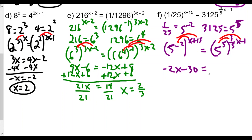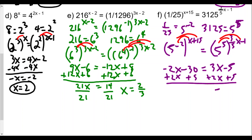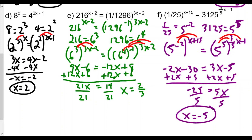Adding 2x to both sides and adding 5 to both sides: −25 = 5x, so x = −5. Checking: plugging x = −5 in, −5 + 15 = 10, so the left side is (1/25)^10 = 5^(−20). On the right: 3 × (−5) × (3/5) − 1 = −9 − 1 = −10, giving 5^(−20). Both sides match — the answer is x = −5.